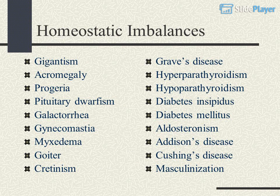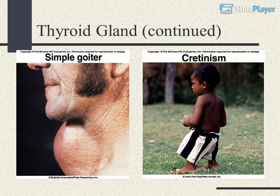Homeostatic imbalances covered include: gigantism, acromegaly, progeria, pituitary dwarfism, galactorrhea, gynecomastia, myxedema, goiter, cretinism, Graves' disease, hyperparathyroidism, hypoparathyroidism, diabetes insipidus, diabetes mellitus, aldosteronism, Addison's disease, Cushing's disease, and masculinization.